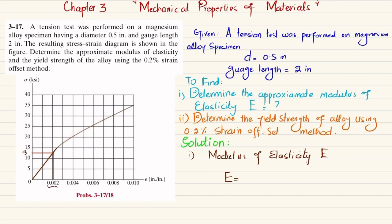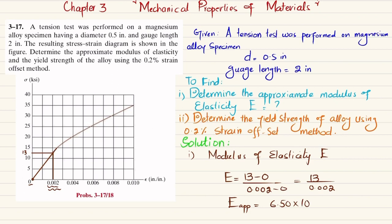So E equals (13 − 0) divided by (0.002 − 0), which gives 13 divided by 0.002. The approximate modulus of elasticity is E ≈ 6.50 × 10³ ksi. This is how we find the modulus of elasticity using the stress-strain curve.